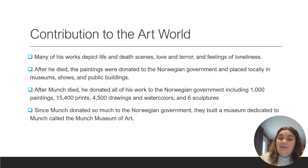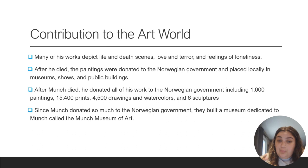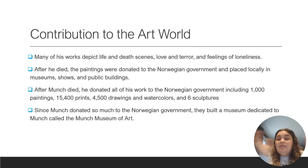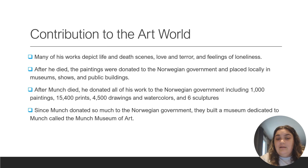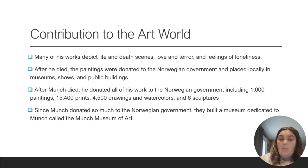What he donated was all of his work over his entire life: 1,000 paintings, 15,400 prints, 4,500 drawings and watercolors, and six sculptures. Since he donated so much — 15,400 prints alone is a lot, not including everything else — the Norwegian government built a museum dedicated just to him with all of his paintings inside, which they actually called the Munch Museum of Art.